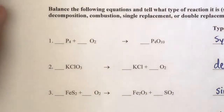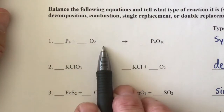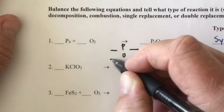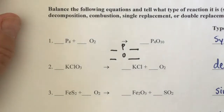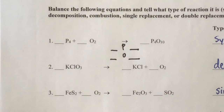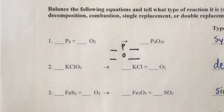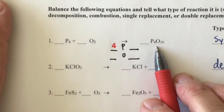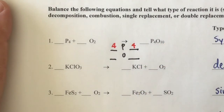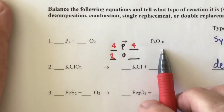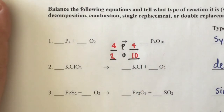In this equation we have phosphorus and oxygen, so we list P and O with blanks to count on each side. On the reactant side we have four phosphorus atoms; on the product side we also have four — those are balanced. Over here we have two oxygens, and over here we have ten oxygens. So we have listed and counted; now we are going to use coefficients.